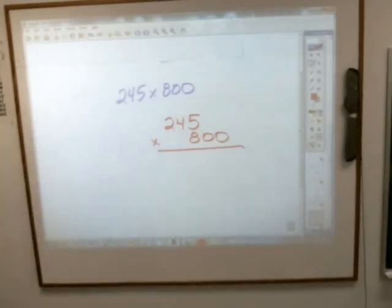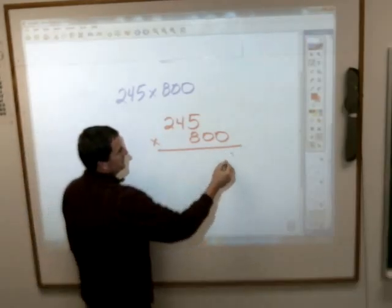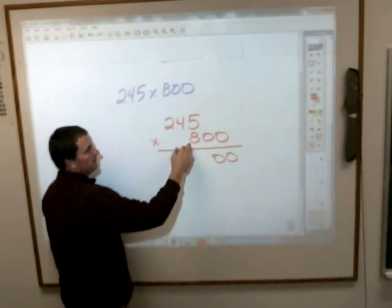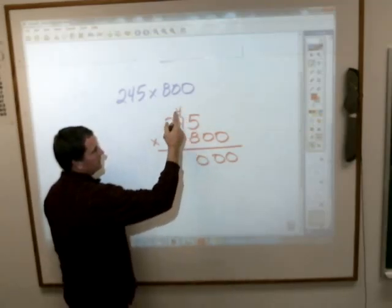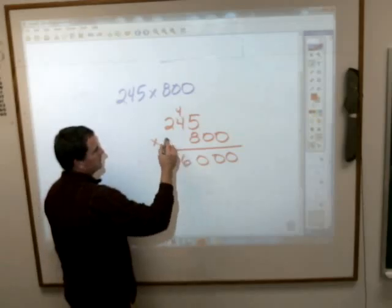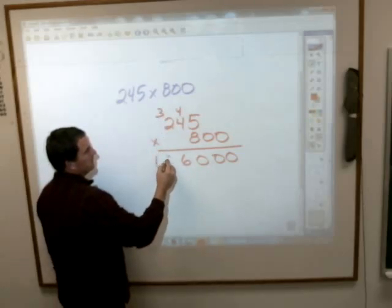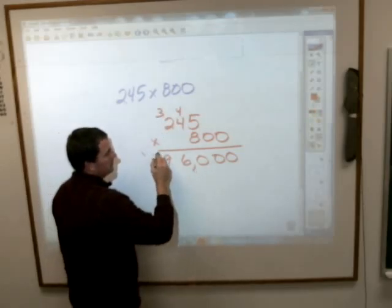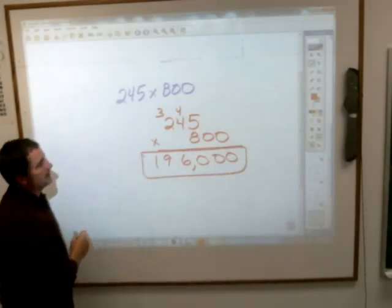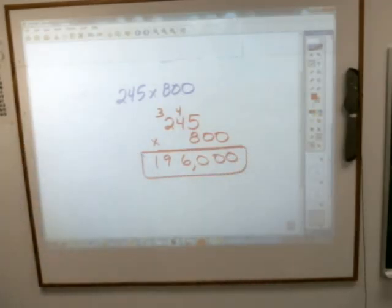And it's really no more complicated than doing 245 times 8, because you're just going to tack on those two zeros at the end. 8 times 5 is 40. 8 times 4 is 32, plus 4 is 36. 16 plus 3 is 19, so 196,000. Are you with me on that?